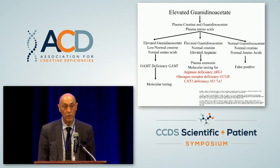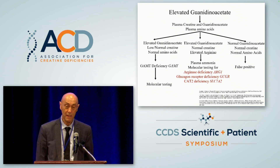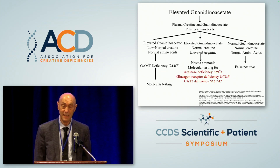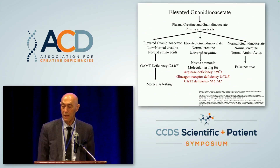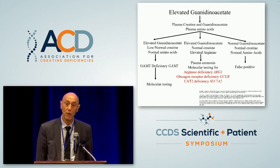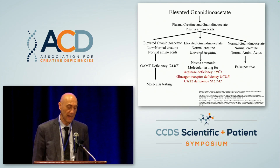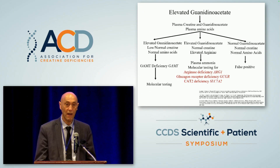When New York State started newborn screening, one of the first patients identified did not have GAM deficiency — the patient had arginine deficiency. Since arginine deficiency can be missed with standard screening, the patient was identified with this additional test, which is still a good outcome because the patient could be treated at birth. The last possibility is that confirmatory testing gives completely normal results — normal guanidino acetate, normal creatine, normal amino acids — which is a false positive. The most common cause is that some patients received arginine or citrulline supplements in the NICU.